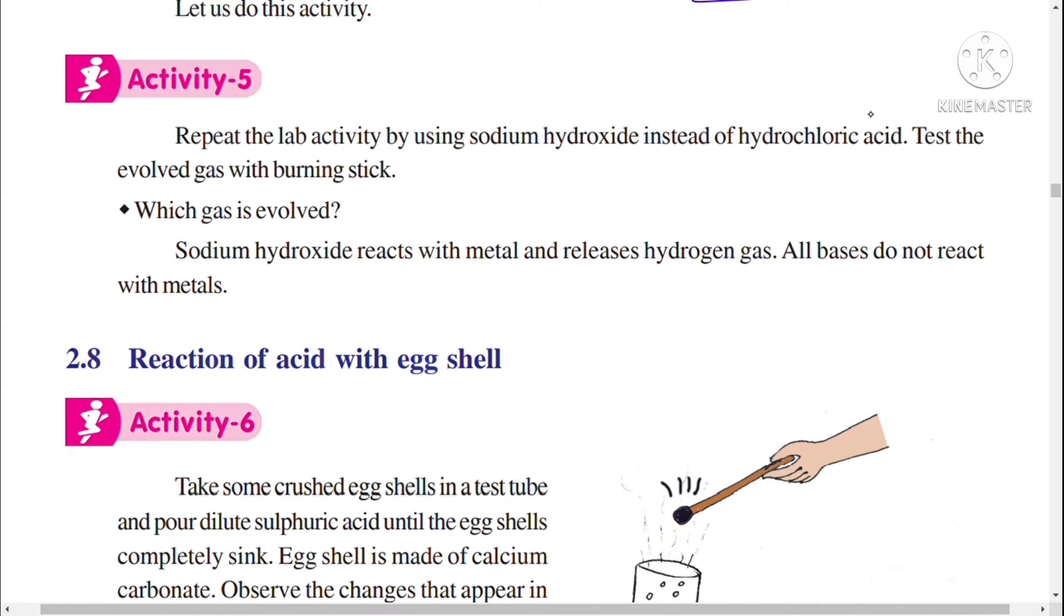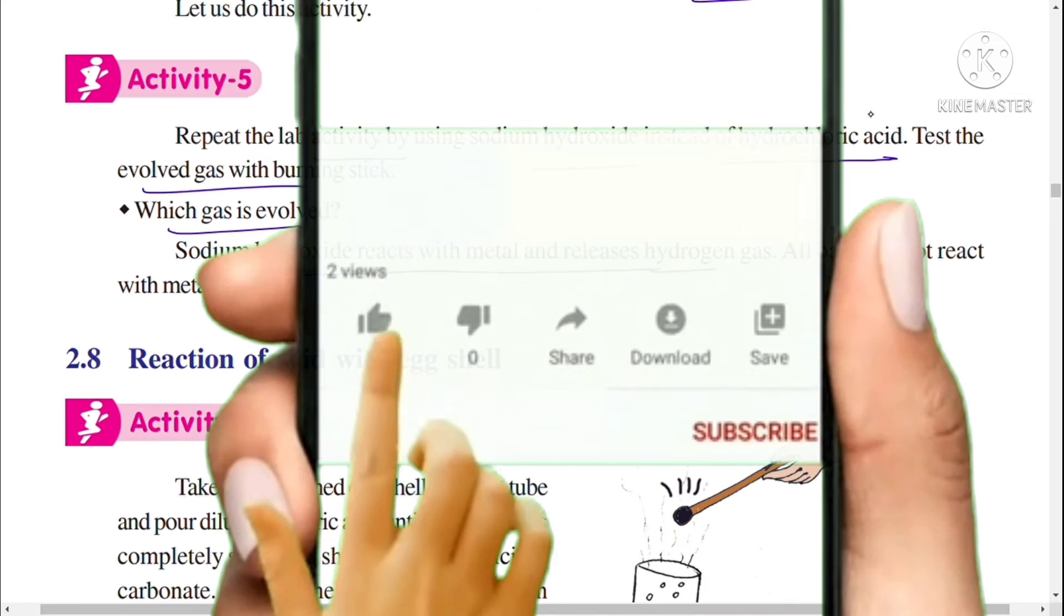Repeat the lab activity by using sodium hydroxide instead of hydrochloric acid. Test the evolved gas with the burning stick. Which gas is evolved? Sodium hydroxide reacts with the metal and releases hydrogen gas. All bases do not react with metals.